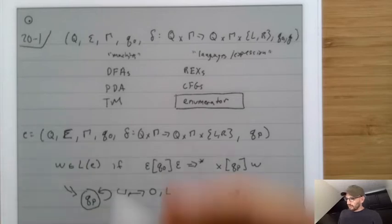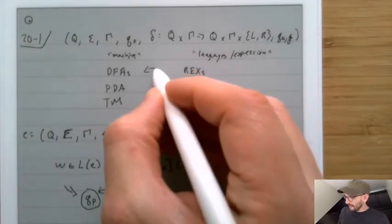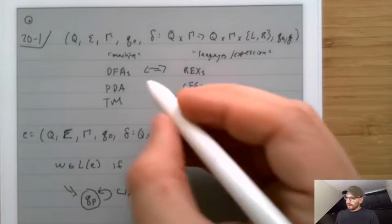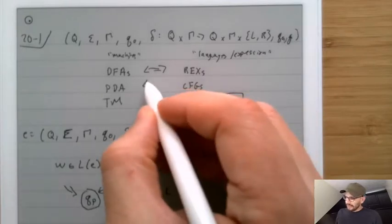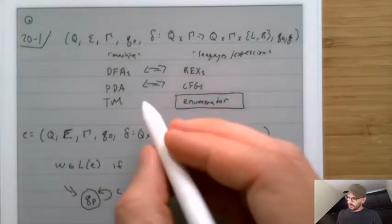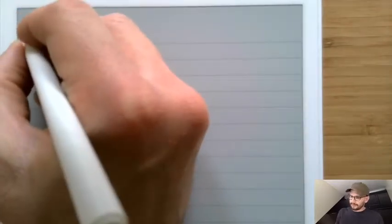Like usual, we proved that DFAs and regular expressions are equivalent to one another, and we proved that PDAs and context-free grammars are equivalent to one another. So we should also try to prove that Turing machines and enumerators are equivalent to each other. Let's talk about how to do that.